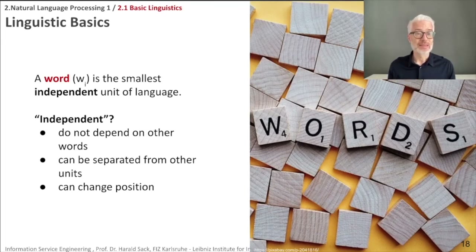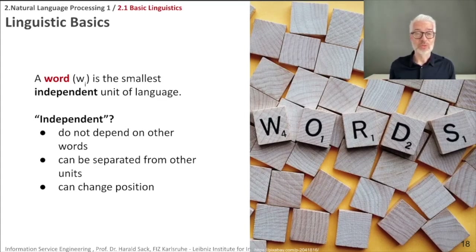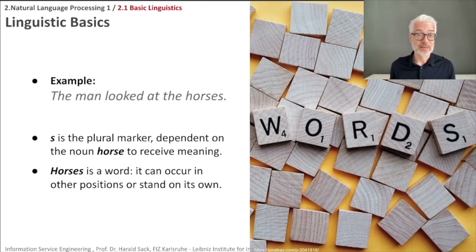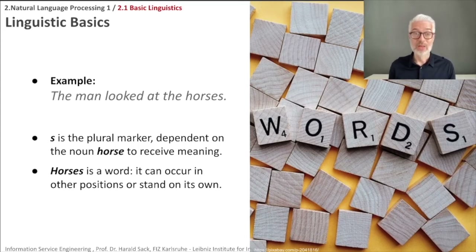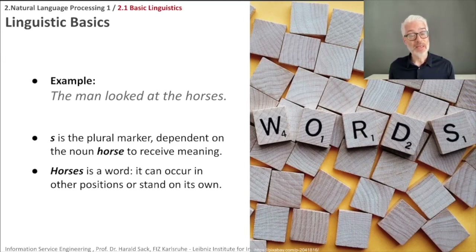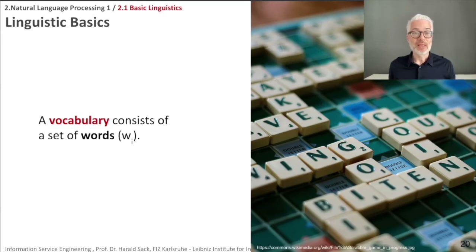Independent means it is not dependent on other words — it can be separated from other units, and it can also change its position within a sentence. Take the example 'the man looked at the horses': the 's' there is only a plural marker which makes sense in combination with the noun 'horse' to receive its meaning. So 's' is not a word; 'horses', for example, is a word — it can occur in other positions and stands completely on its own. That is the smallest independent unit in a language.